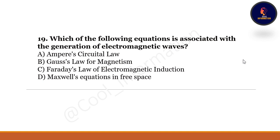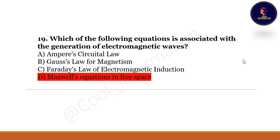Nineteenth question: which of the following equations is associated with the generation of electromagnetic waves? Option A: Ampere's circuital law. Option B: Gauss's law of magnetism. Option C: Faraday's law of electromagnetic induction. Option D: Maxwell's equations in free space. The correct option is D — Maxwell's equations in free space.